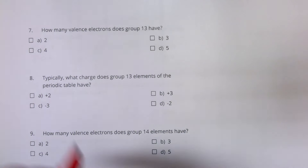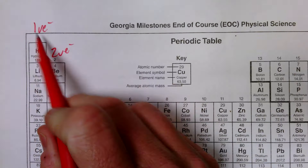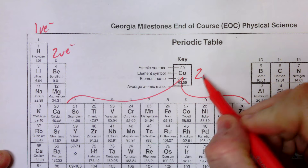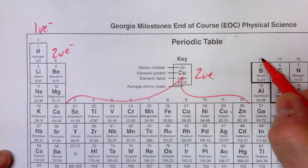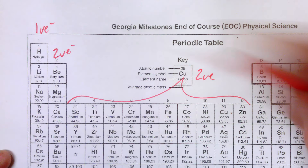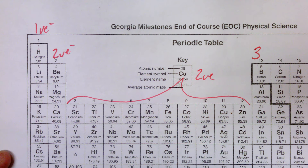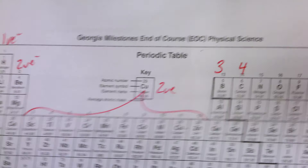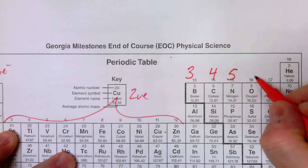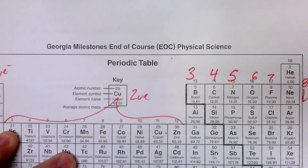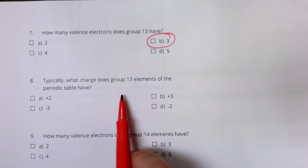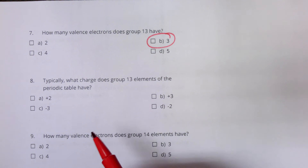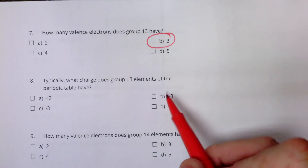How many valence electrons does group 13 have? Group one has one, group two has two. When we start the p block — s1, s2 — this is now p1, so you have two plus the one p electron: three valence electrons. Group 13 has three. What's going to be their charge? They're still going to give up those three electrons to get to the octet rule, so they're going to have a plus three ionic charge.